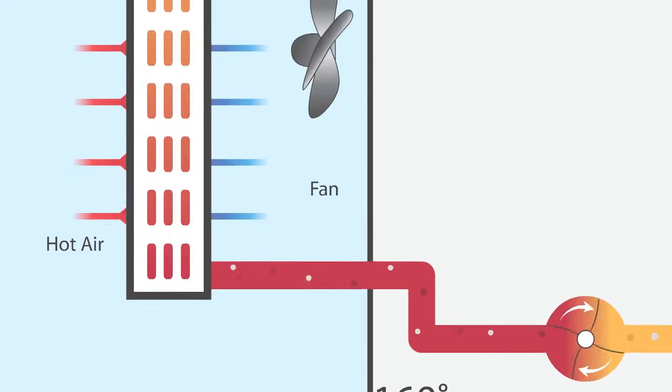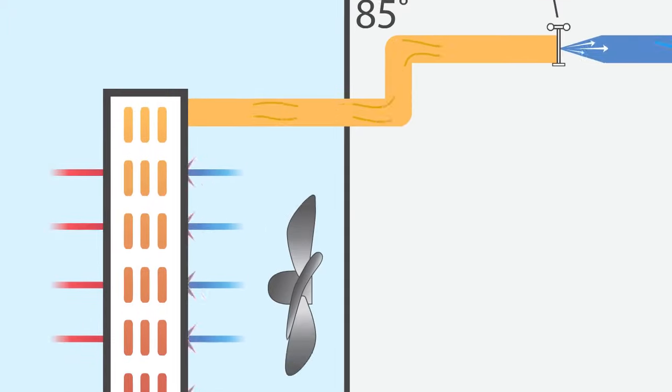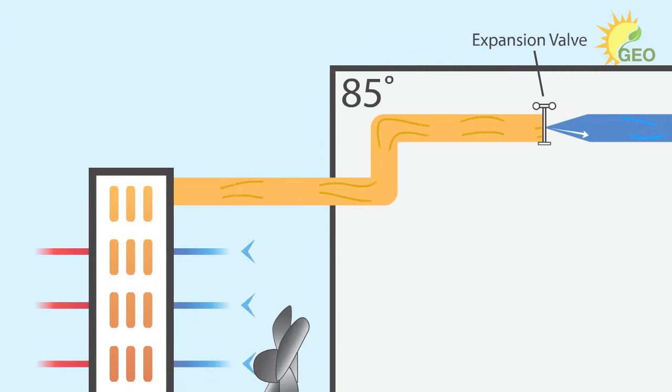Let's say the refrigerant starts its journey in its gaseous state and enters the compressor at 30 degrees. The compressor compresses the gas, which increases the pressure and raises the temperature to 160 degrees. The refrigerant travels to a coil where a fan blows across it.